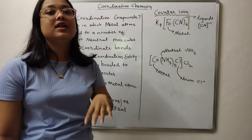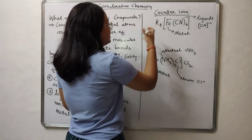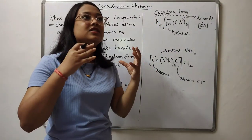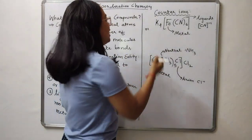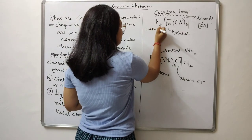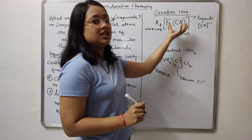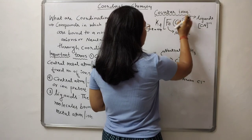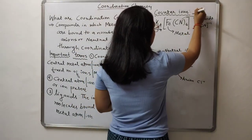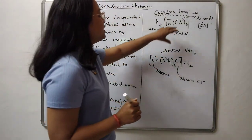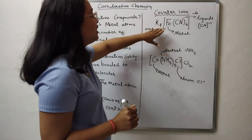The role of counter ions in coordination chemistry is to balance out the overall charge present on your coordination entity. In the first case, potassium is a group 1 metal with an oxidation state of plus 1. Four potassium atoms are present, giving an overall charge of positive 4. This balances a negative 4 charge on the coordination entity — meaning iron with 6 cyanide molecules carries an overall charge of minus 4. Potassium is the counter cation, also known as the balancing cation.